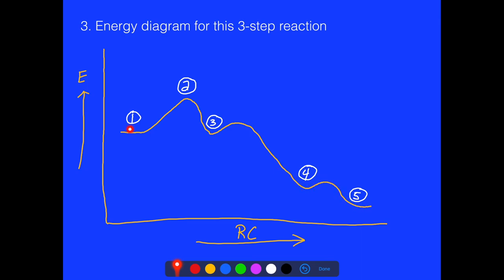Anytime we break bonds, we have to put energy in. The carbocation involves rearranging structure, which requires a little bit of potential energy. These energy diagrams are a great way for us to see these mechanisms in terms of their energy.